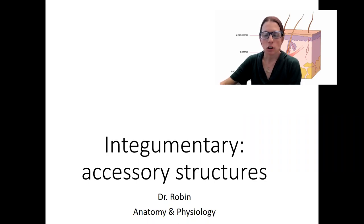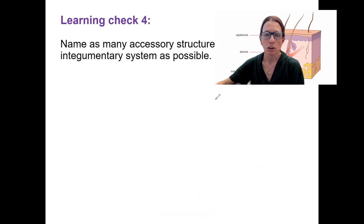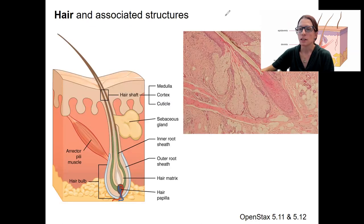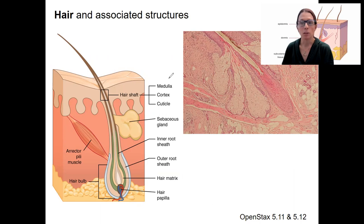I'm going to talk about the accessory structures, also called the appendages of the integumentary system. I already mentioned some of these briefly, so I want to start with a learning check — list as many as you can think of without looking things up. I'll go through them in this video. I've got one learning outcome for all of these various structures and the basics of them.